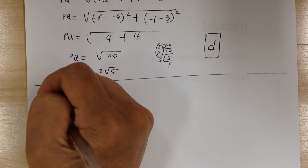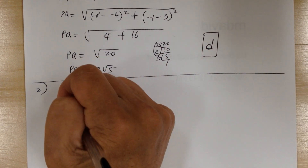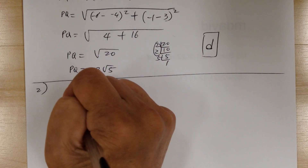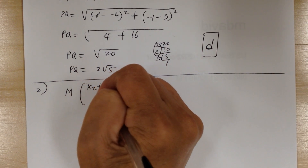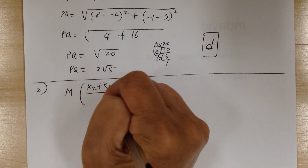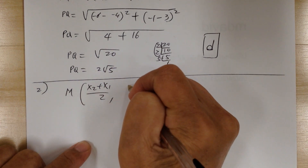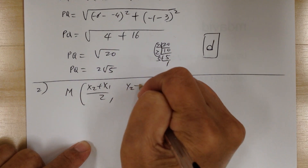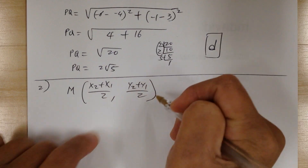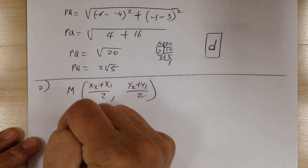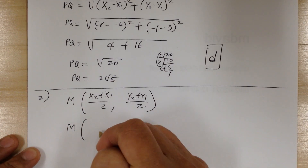Number 2, find the midpoint. The midpoint formula would be x2 plus x1 over 2 — you average the two — and y2 plus y1 over 2 — you average the two. So the midpoint would be...